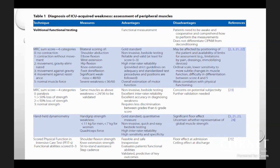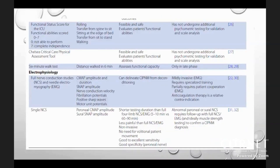The functional status score for ICU is tested by rolling, transfer from supine to sit, sitting at edge of bed, transfer from sit to stand, and walking. It is feasible and safe and evaluates patient's functional abilities, but has not undergone additional psychometric testing for validation.